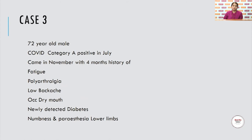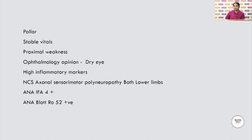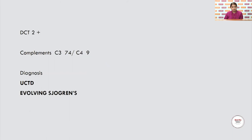Case 3: A 72-year-old male, COVID category A positive in July. Four months later in November, he presented with fatigue, polyarthralgia, low backache, and occasional dry mouth since recovering from COVID. He had newly detected diabetes, numbness, and paresthesias over the lower limbs. Examination showed pallor with proximal muscle weakness. Ophthalmology found dry eye. He had high inflammatory markers. Nerve conduction study showed axonal sensory-motor polyneuropathy in both lower limbs. ANA-IFA was 4+, ANA blot was Ro52 positive, DCT was 2+, and complements C3 and C4 were low. The diagnosis: undifferentiated connective tissue disease — probably an evolving Sjogren's given the nerve involvement and dry eye.